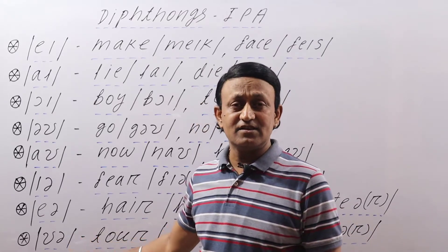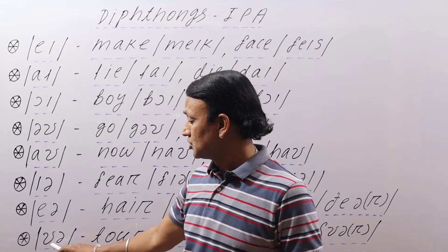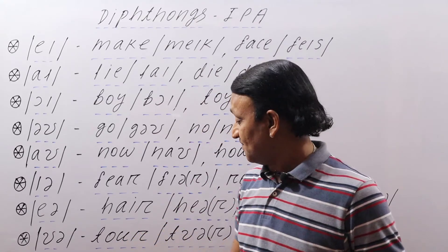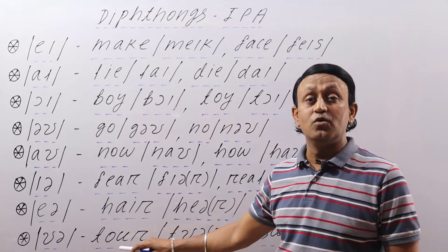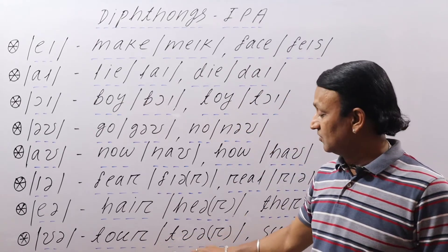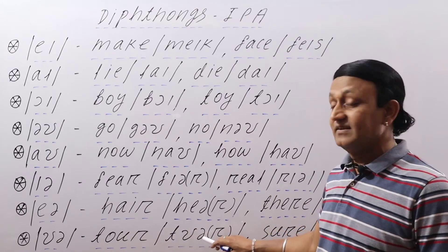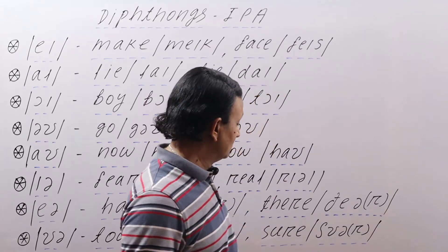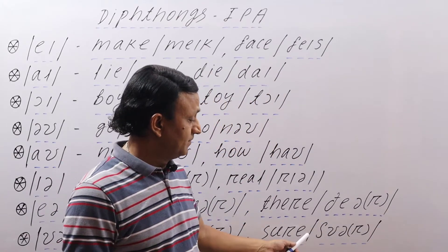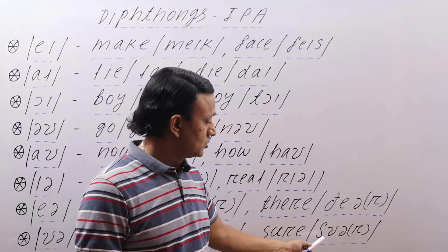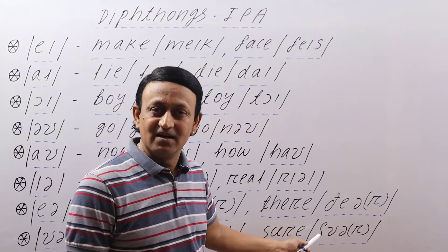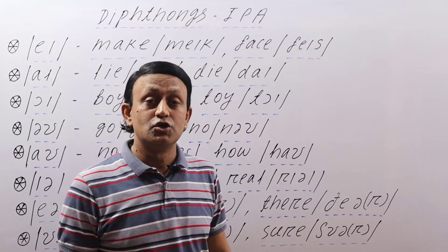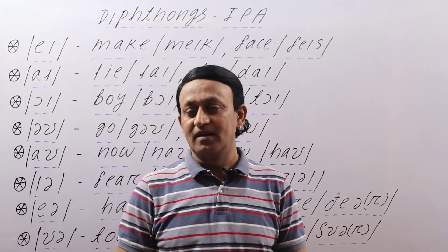The last diphthong is the /ʊə/ sound. This is a short U and a schwa sound, together making /ʊə/. In words like 'tour' — T-O-U-R — T and then the /ʊə/ sound makes 'tour'. And 'sure' — S-U-R-E — the 'sh' sound and then /ʊə/ makes 'sure'. So /ʊə/ is the last diphthong.